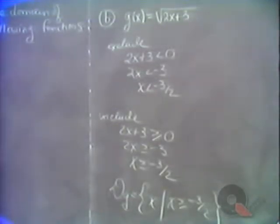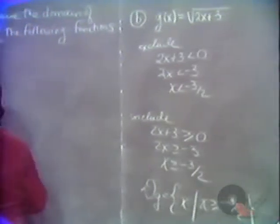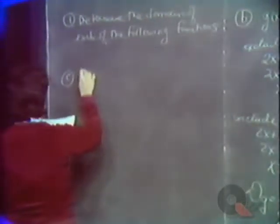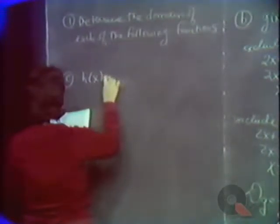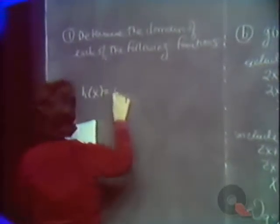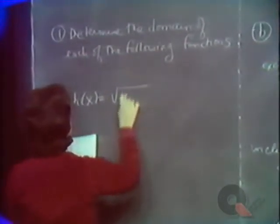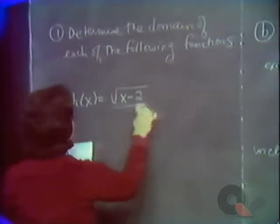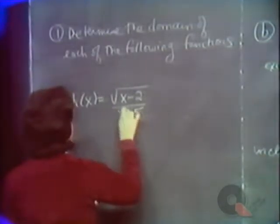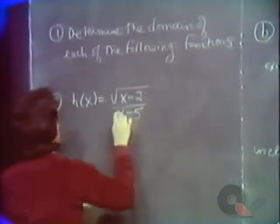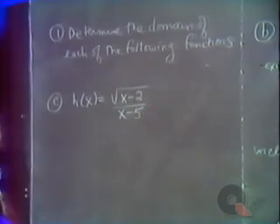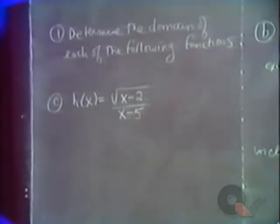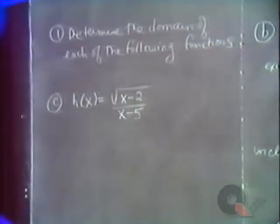Finally, in part c, we have h of x is equal to the square root of the quantity x minus 2 over x minus 5. Here we have both problems to worry about — we have a square root and we also have a fraction.